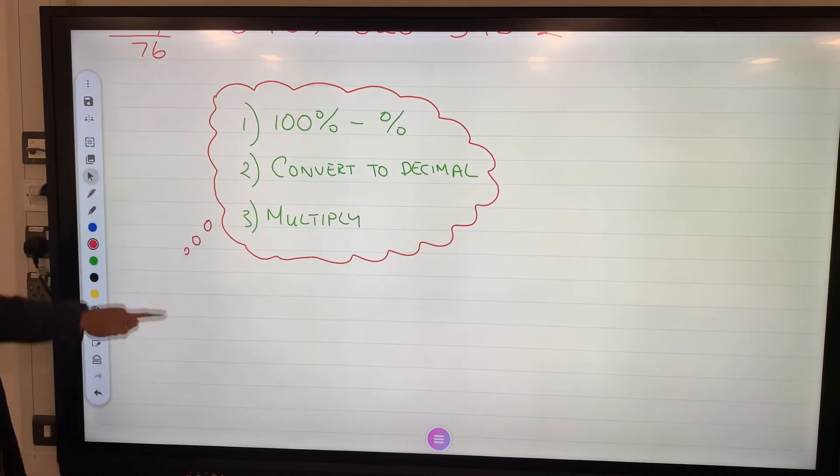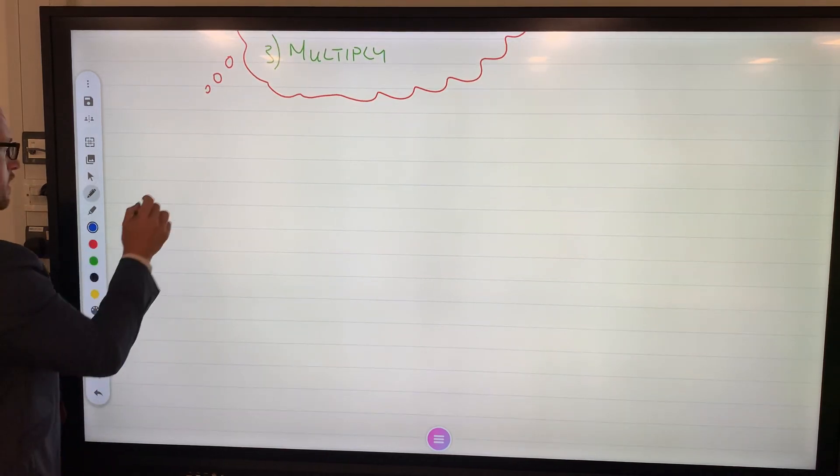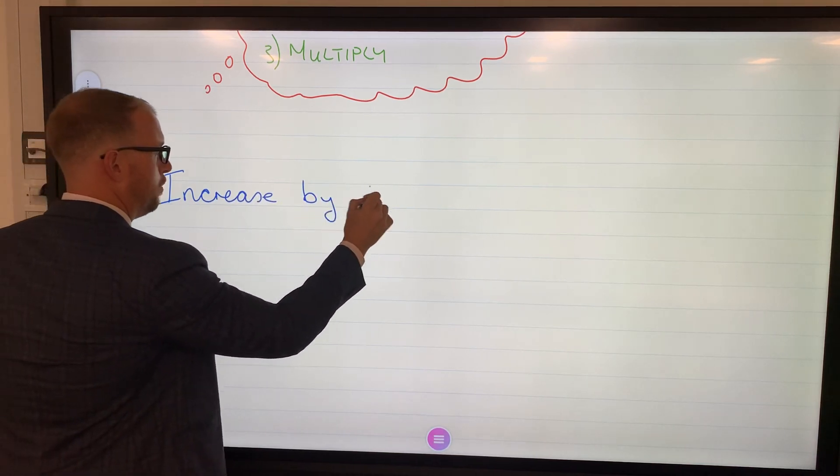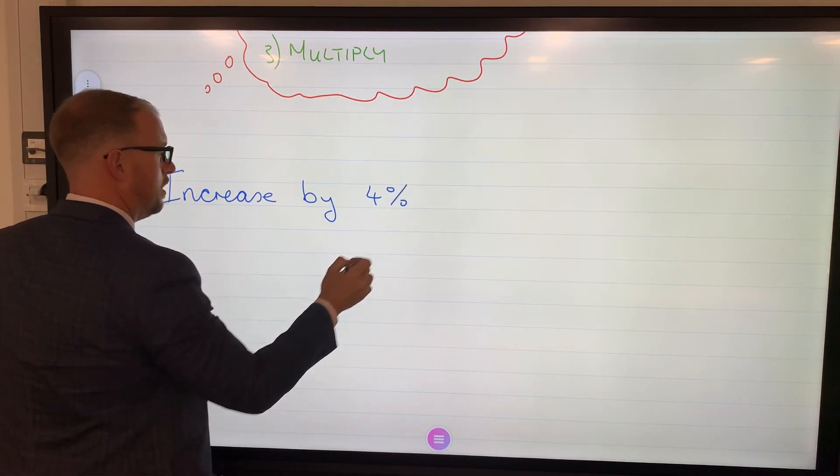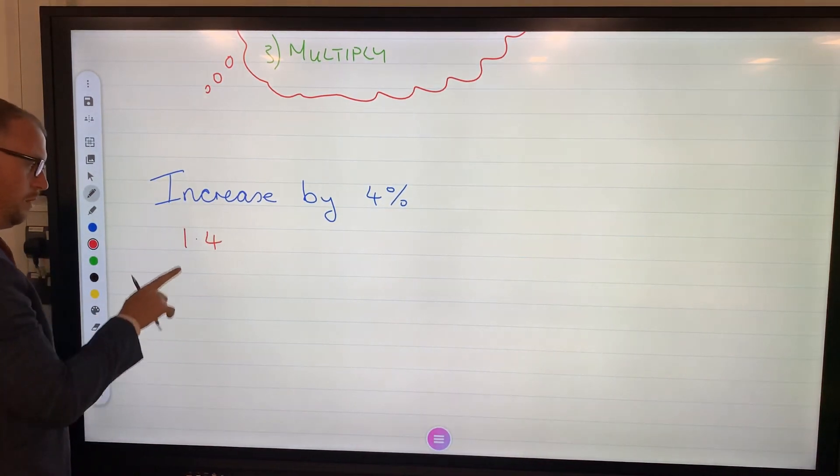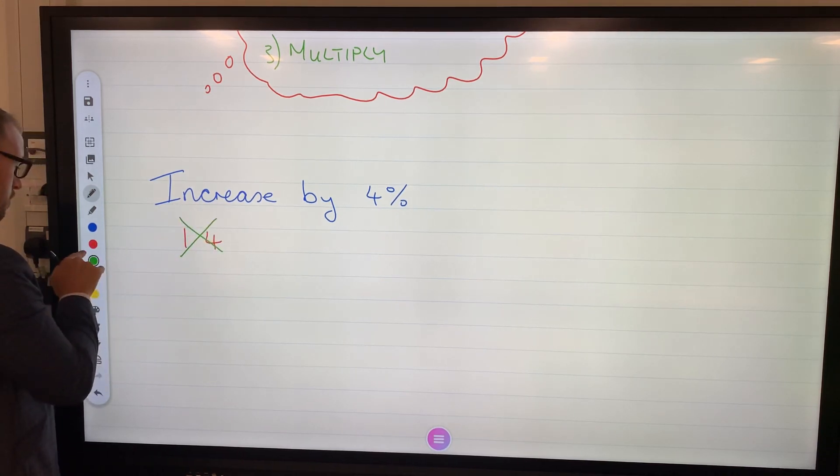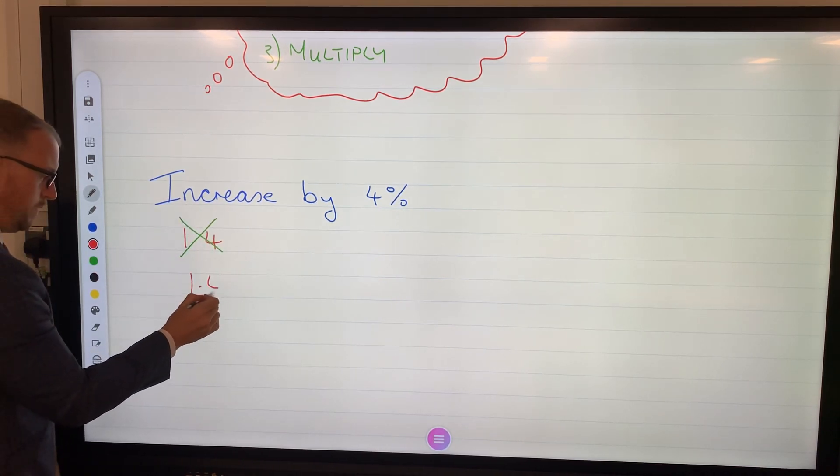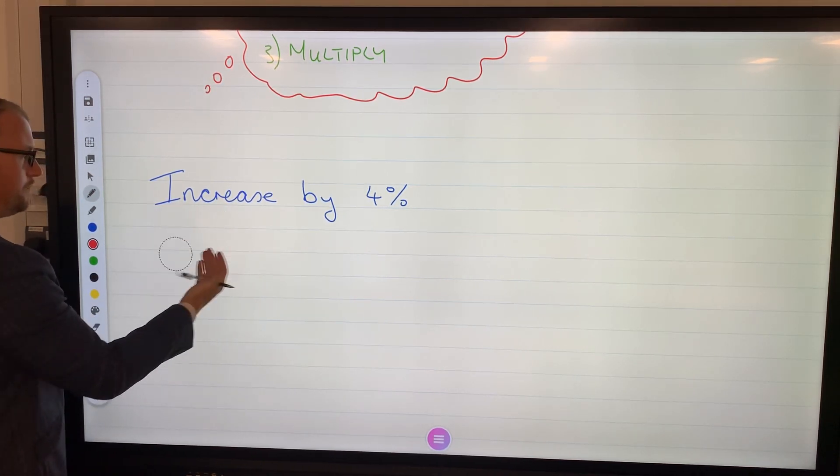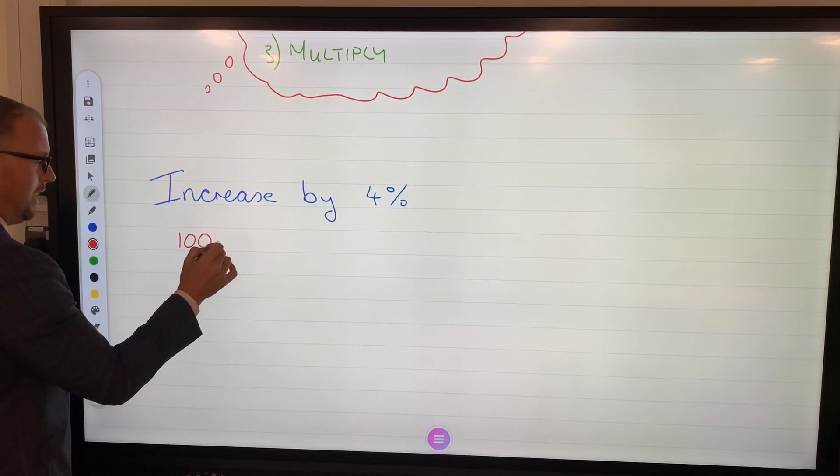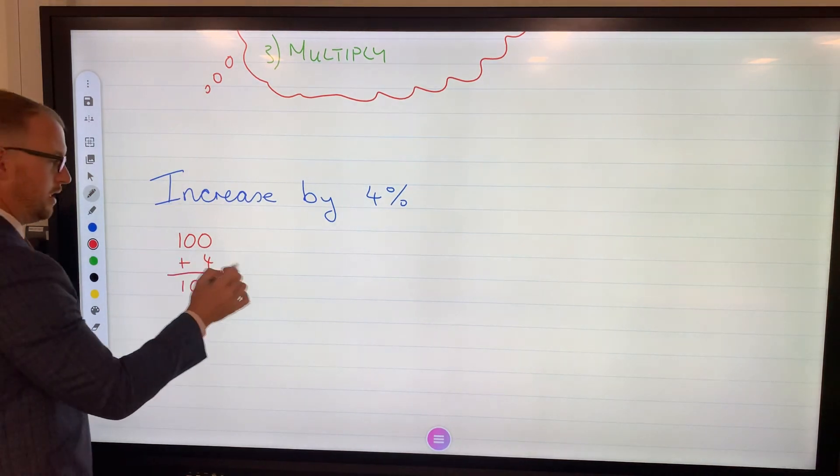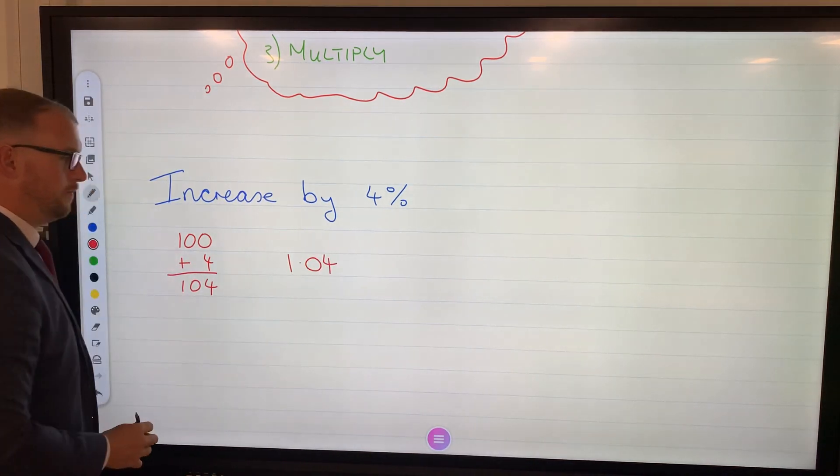Couple things to look out for though. If we were to increase by four percent, a lot of you will be tempted to put 1.4. But that's wrong because 1.4 technically is 40 percent increase. This is only four percent. That's why we have a hundred percent add to the 4 to make 104. Then convert to decimal 1.04, and it works every time.